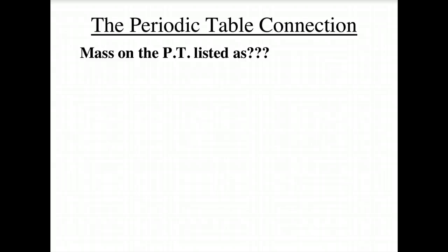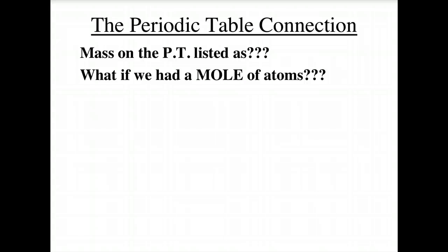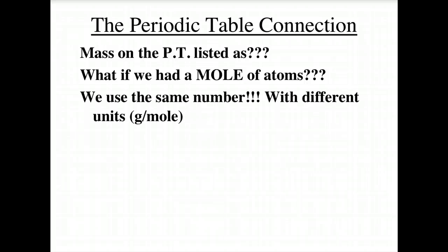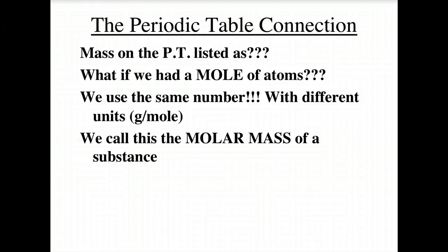There's a periodic table connection as well. Now, we have talked about the mass on the periodic table listed as the atomic mass unit using AMUs. Well, what if we had a mole of atoms? What would we do then? We use the same number, just with different units. So instead of AMUs, we switch it to grams per mole.